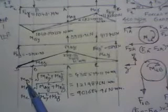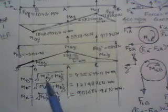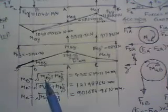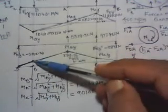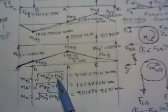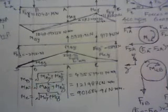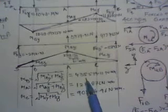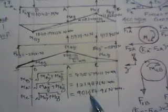The bending moment at point B is given by the square root of the sum of squares of the bending moment components in the YZ plane (horizontal) and XY plane (vertical). Similarly we calculate the resultant bending moments at points A and C. The resultant bending moment at point A is found to be maximum among the three points.